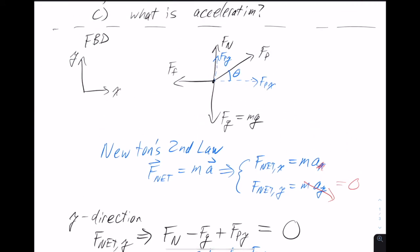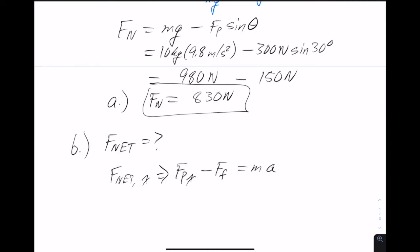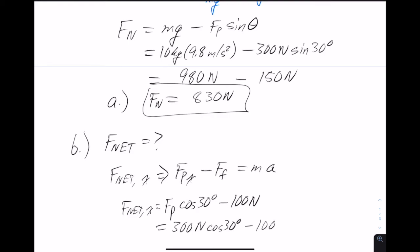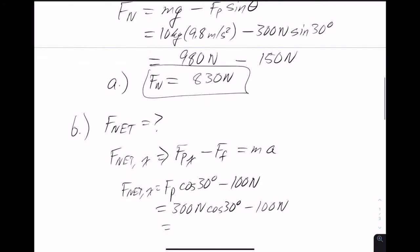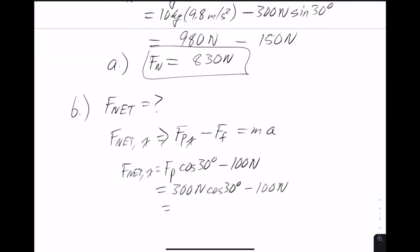Setting up the x-direction equation: f net in x equals the x component of the pulling force minus friction, equal to mass times acceleration. For the x component of the pulling force, that's fp times cosine of 30 degrees, minus the 100 newtons friction force. So that's 300 newtons times cosine of 30 degrees, which is 260 newtons rounding to three significant figures, minus 100 newtons. So the net force in the x direction is 160 newtons pointing to the right.